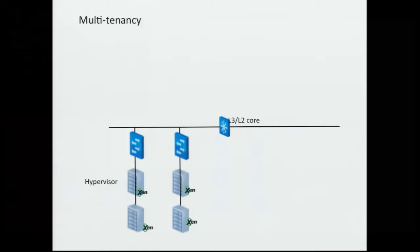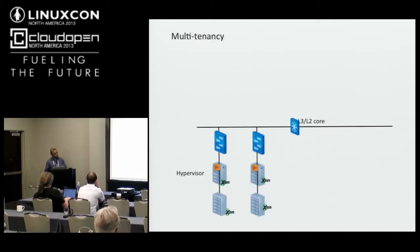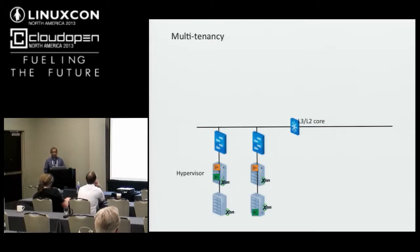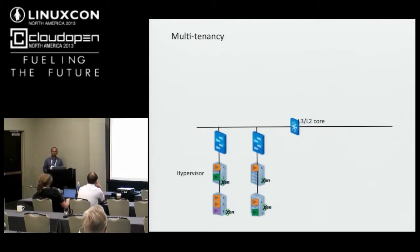Diving deeper into what multi-tenancy from a network perspective means — let's say you have two racks of servers with some Xen hypervisors. Tenant Joe comes in and starts a few VMs, and depending on the occupancy of these hypervisors, they could start anywhere and may not be in the same broadcast domain. Tenant David comes along and starts a few more VMs, which could be on the same hypervisor as Joe. Then Chris comes along, and now you need to isolate at the network level between these tenants.